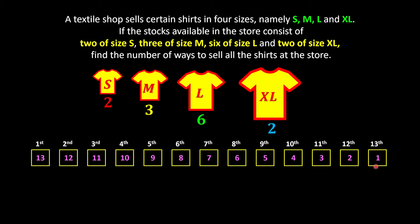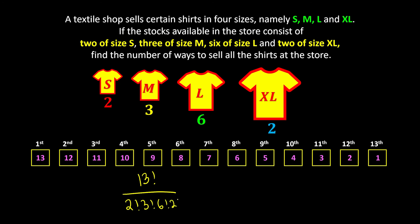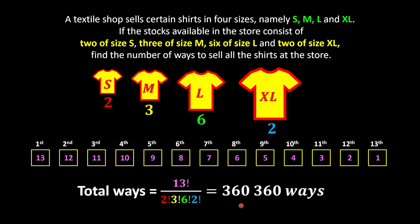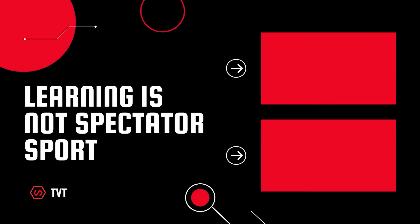Don't forget we have identical objects — for the S size, we can't tell which S we're selling first since they look the same. So we start with 13! ways to arrange the selling order, then divide by the identical objects: 2! for the S sizes, 3! for the M sizes, 6! for the L sizes, and 2! for the XL sizes. This gives us the final number of distinct selling sequences.